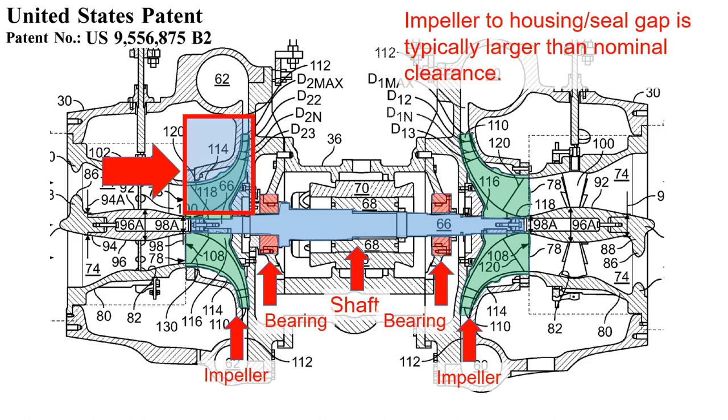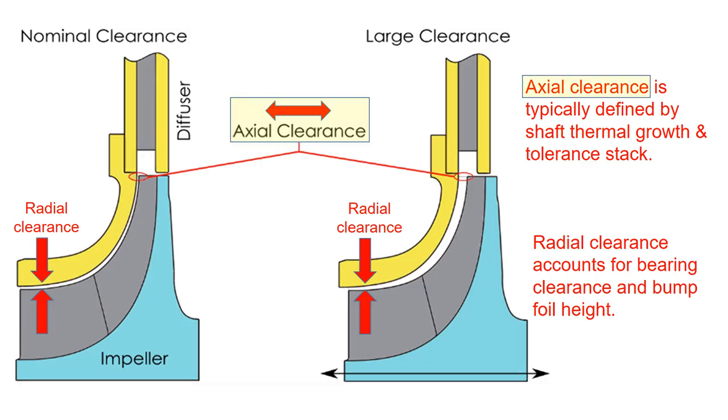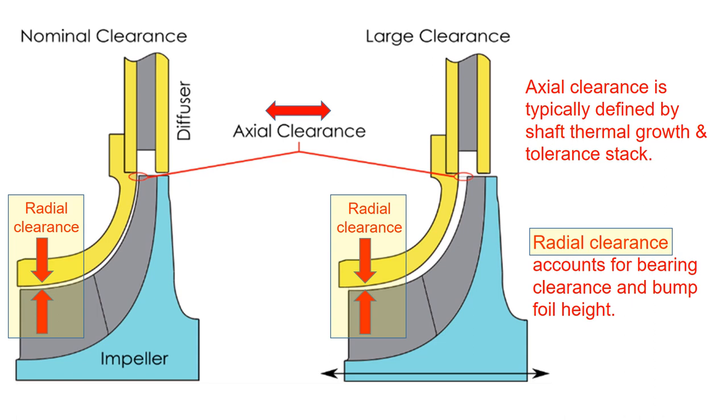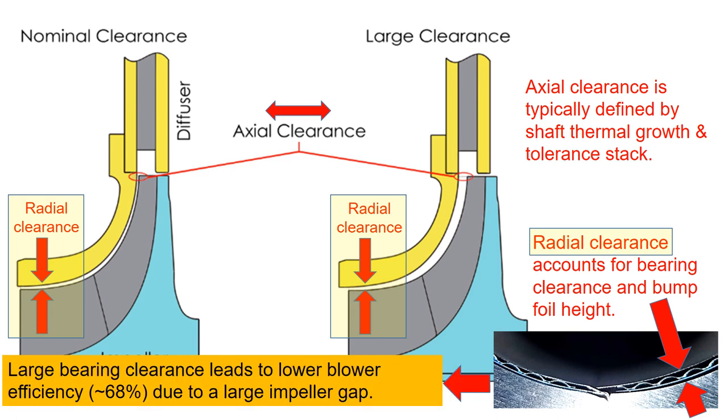Let's zoom in to this area. The axial clearance is typically defined by shaft thermal growth and tolerance stack. The radial clearance accounts for bearing clearance and the bump foil height. As you can imagine, the large bearing clearance leads to lower bearing efficiency.